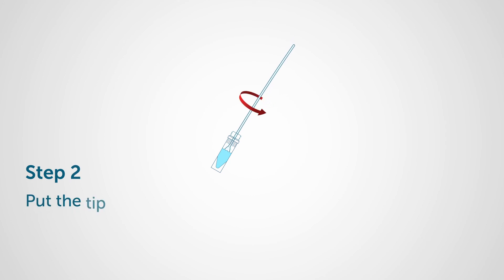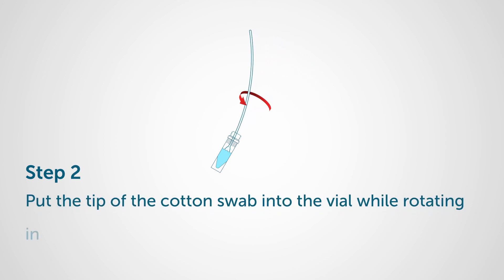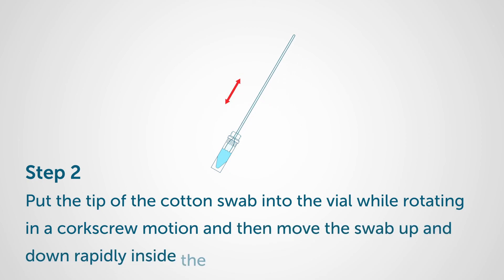Step 2: Put the tip of the cotton swab into the vial while rotating in a corkscrew motion, and then move the swab up and down rapidly inside the liquid about 10 to 15 times.